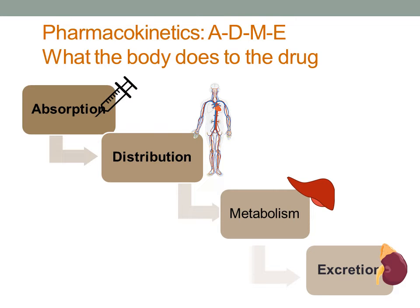Pharmacokinetics is what the body does to the drug — we call this the drug cycle. This cycle has four main phases: absorption, distribution, metabolism, and excretion. Remember ADME. This is the drug cycle.